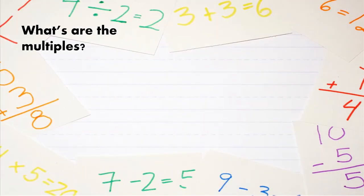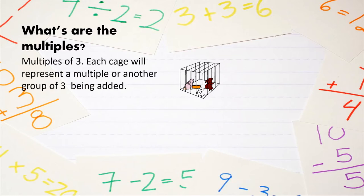So what are the multiples? In this specific example, we have a group of rabbits. And there are three rabbits in each group. So we could say that we're going to have multiples of three. And each cage will represent a multiple or another group of three being added. So we have one group of three, which would be one times three.